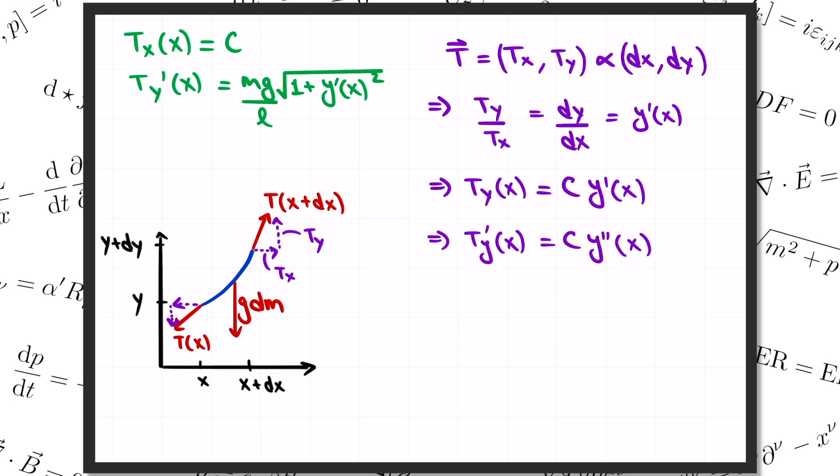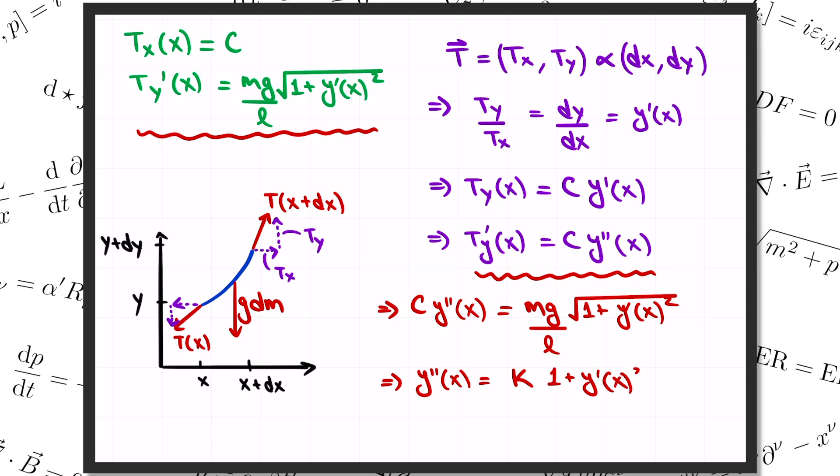Now we can combine that with our earlier equation for T y prime in order to eliminate the tension altogether and just get an equation for the function y. We get C times y double prime is equal to mg over l, square root of 1 plus y prime squared. And if I simplify this a little bit, we can write it as y double prime equals kappa times the square root of 1 plus y prime squared, where I've defined kappa as mg divided by C times l, for short. This is what we've been after. A differential equation whose solution will tell us the shape y of x of the rope. That was all the physics.